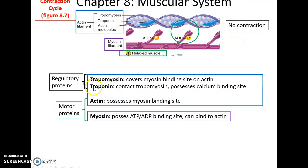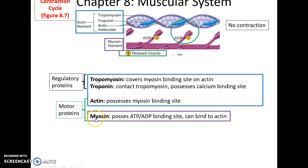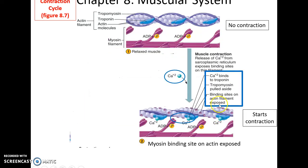The calcium ions then perform an important role at the level of the sarcomere. The thin filaments have two regulatory proteins: tropomyosin, which covers up myosin binding sites on the actin proteins, and troponin, which contacts the tropomyosin and possesses calcium binding sites. The thin filament also has actin proteins with myosin binding sites. In the thick filament, myosin has a binding site that can bind to actin and cause movement. Actin and myosin are the motor proteins; tropomyosin and troponin are the regulatory proteins.